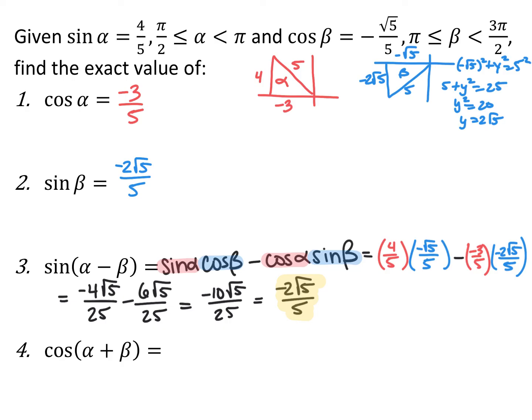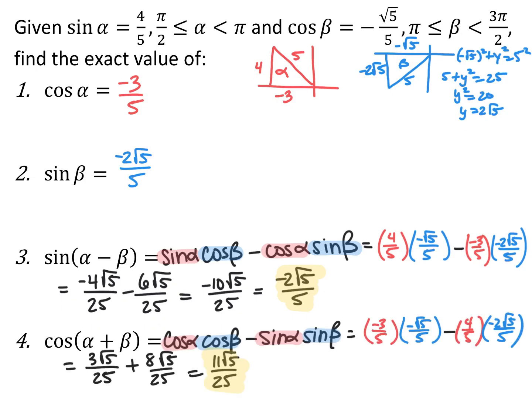Now evaluate cosine of alpha plus beta. Cosine uses the same trig function with opposite sign: cosine alpha cosine beta minus sine alpha sine beta. Cosine of alpha is −3/5, cosine of beta is −√5/5, sine of alpha is 4/5, and sine of beta is −2√5/5. Putting everything together gives 11√5/25. Even though we never found the actual angle measurements, we could still evaluate each individual trig function.